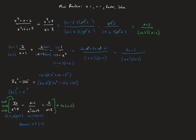On the right side, the x plus 3 cancels, and we get both x minus 3s surviving, giving 2 times x minus 3 squared. Now distributing: the left side gives 4x squared minus 12x. For the middle term, I'll expand x minus 1 times x plus 3 and then apply the negative sign: x squared becomes minus x squared, 3x minus x gives minus 3x plus x, and negative 1 times 3 is negative 3 which becomes plus 3 after the outer negative.